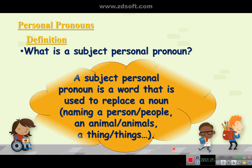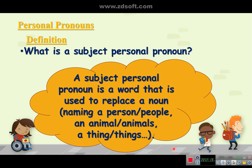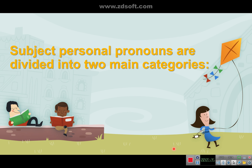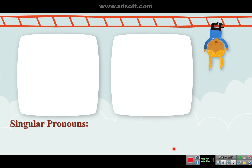What is a subject personal pronoun? A subject personal pronoun is a word that is used to replace a noun naming a person or people, an animal or animals, a thing or things. Subject personal pronouns are divided into two main categories.